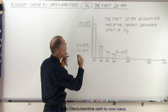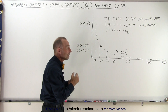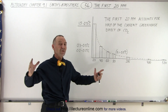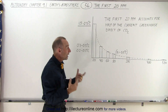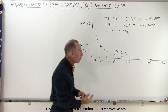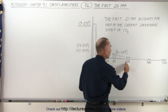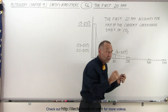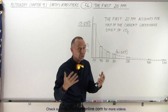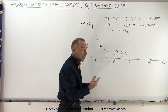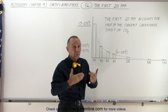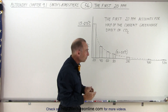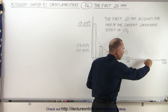It is that first 20 parts per million that account for a full 50% of the total effect. So what happens when we go from 285 to 400 parts per million? Well, the exact change we are not sure of. Apparently our climate models are not correct because we are diverging from them.